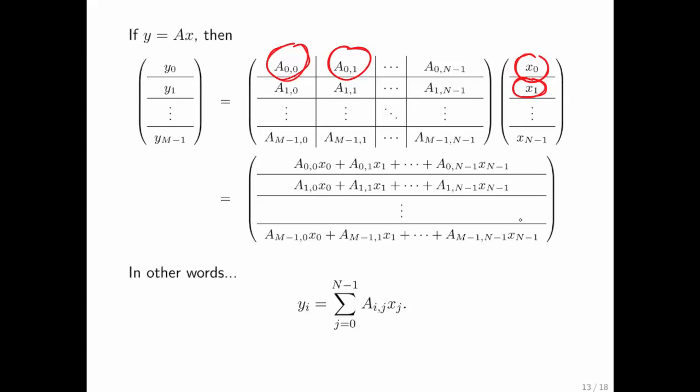In other words, the typical ith part of the vector y, the ith subvector of y, is just computed by taking the inner product of the corresponding row of A with the vector x, partitioned into the sub-matrices and subvectors.